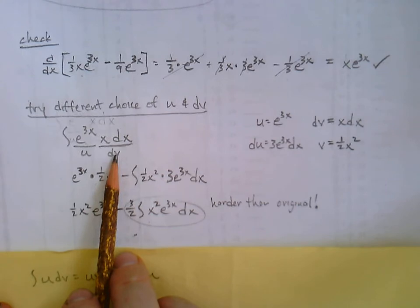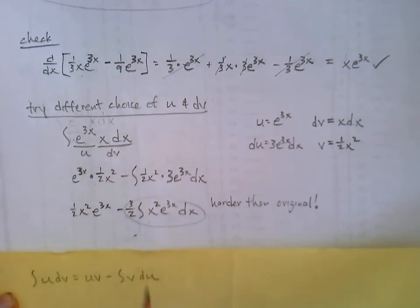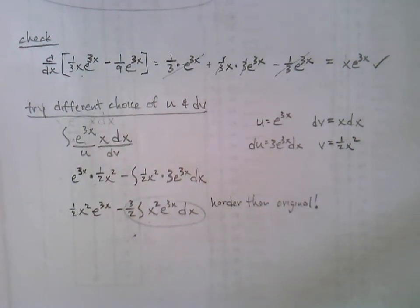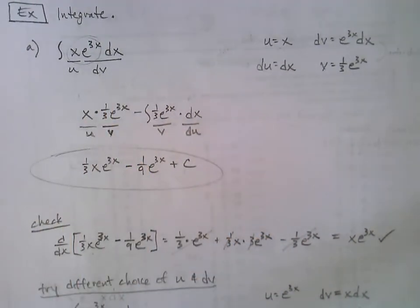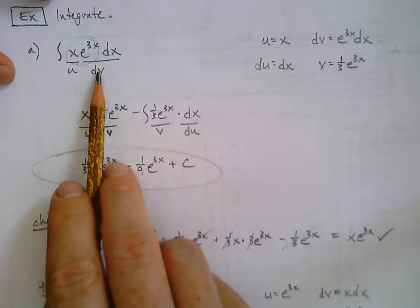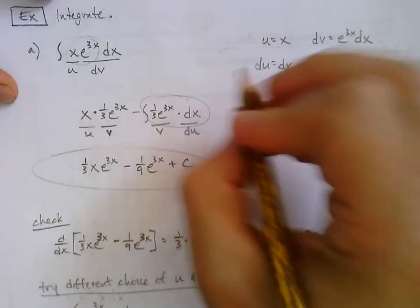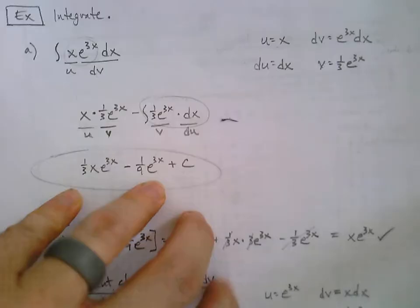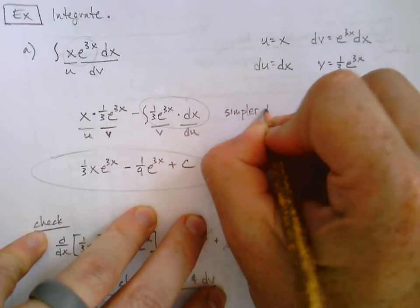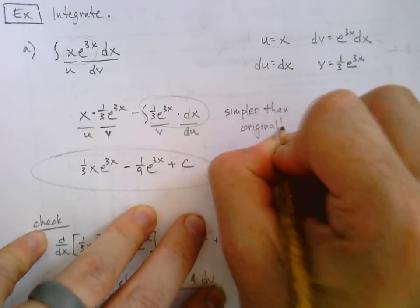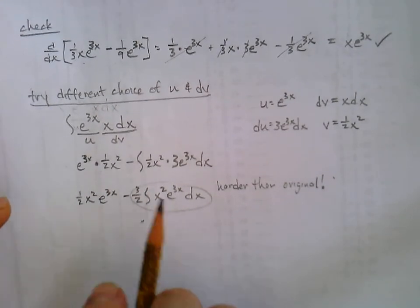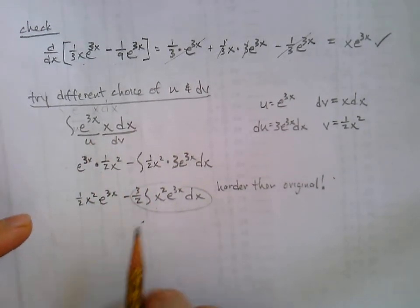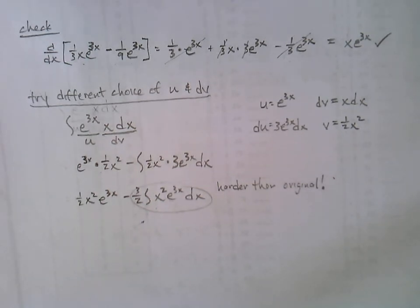If the choices for u and dv lead to a harder integral, those choices must be backwards. Compare that to the correct approach, where the remaining integral was simpler than the original — we were clearly on the right track. The key insight: if the resulting integral is more complex than the original, stop and swap your choices.